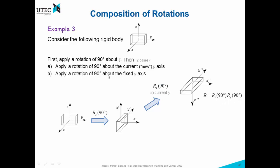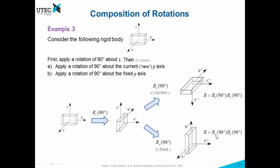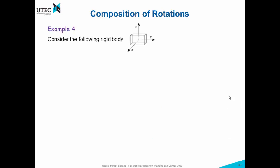The second case is applying a rotation of 90 degrees about the fixed y axis — not the new y, but the initial y axis. If we rotate about this fixed y axis by 90 degrees, z will point to the front and y will point up. Since it was with respect to the fixed frame, this Ry will pre-multiply Rz. It is important to note that rotating about the current axis versus the fixed axis gives a different final result, and that matrix multiplication is not commutative — Rz·Ry ≠ Ry·Rz.